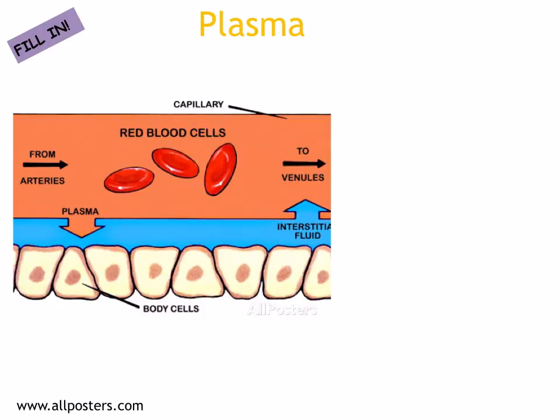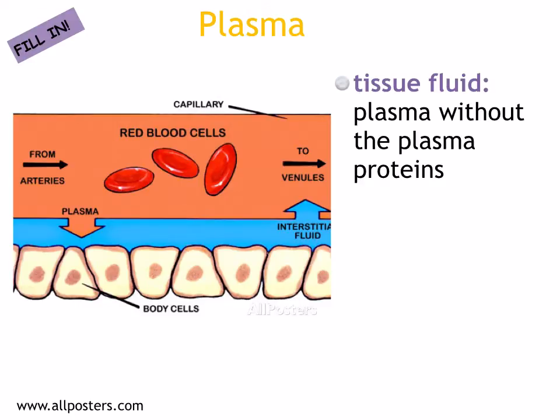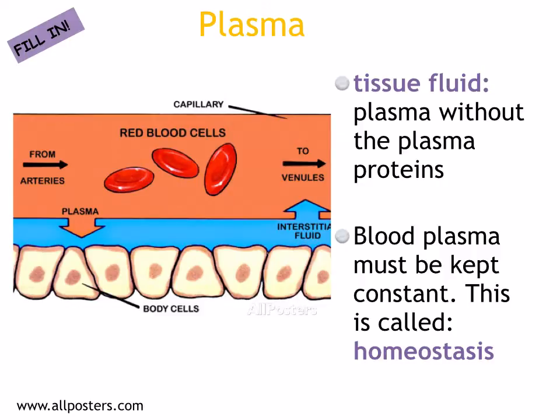Here's a diagram of a capillary and the cells of the body. Plasma can move out of the capillaries and into the spaces around the cells. This forms tissue fluid, which surrounds each cell. The proteins inside the capillaries are too large to move out, so only the liquid part moves out. So we say tissue fluid is plasma without the plasma proteins. Substances move between tissue fluid and the body cells, and the cells must be kept in a constant environment — we call this homeostasis.